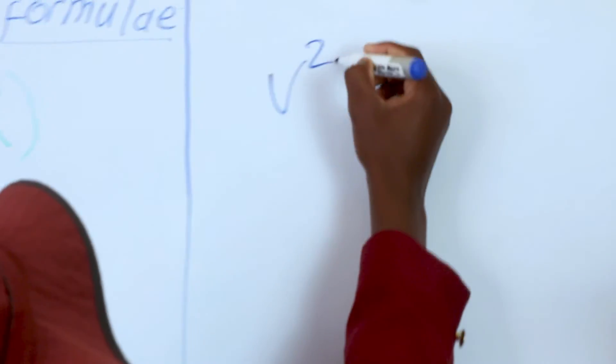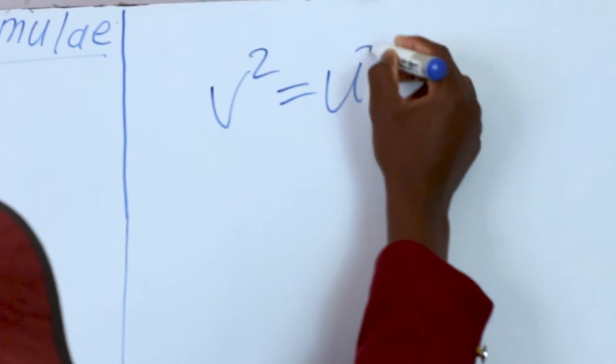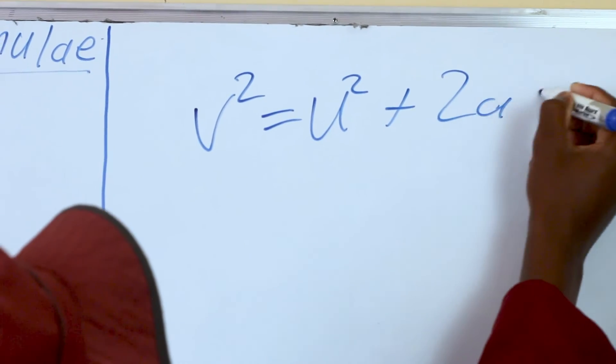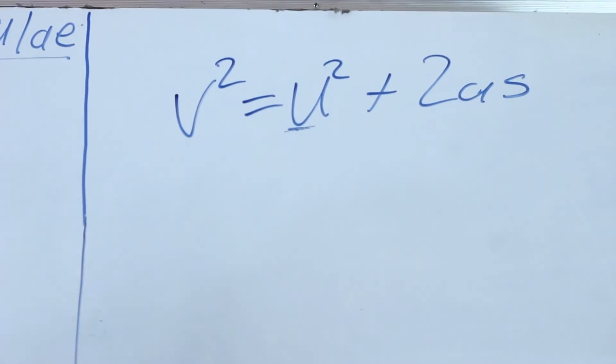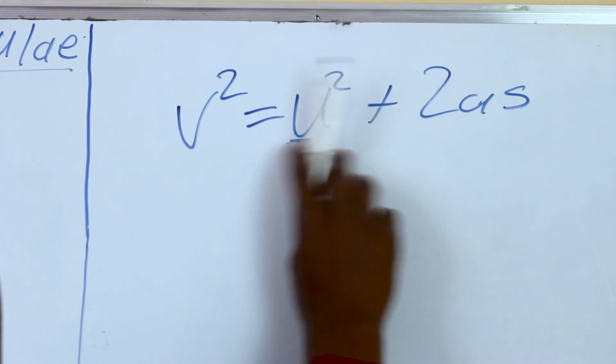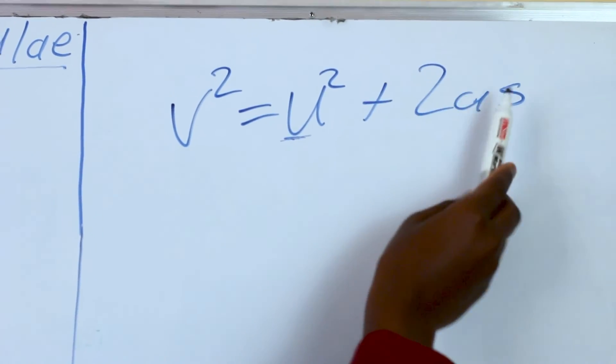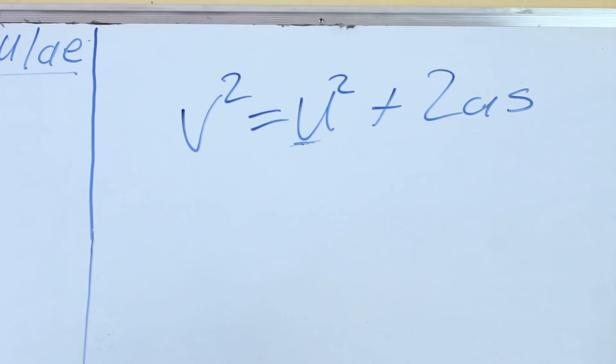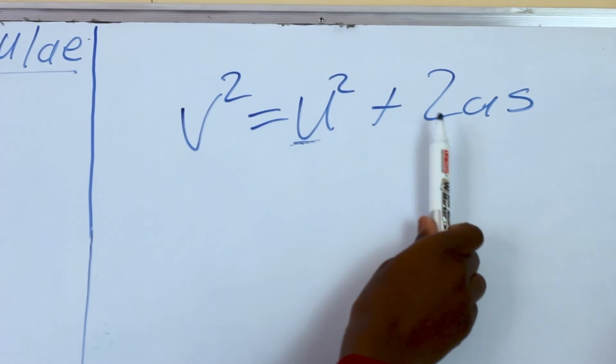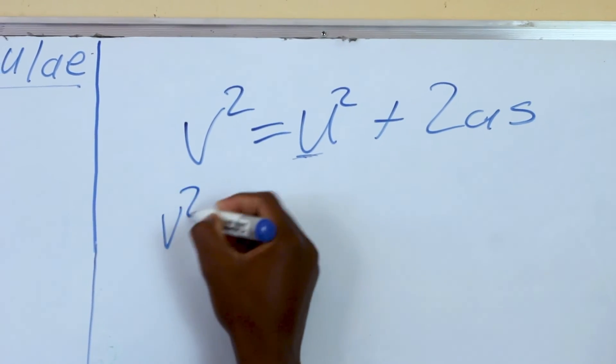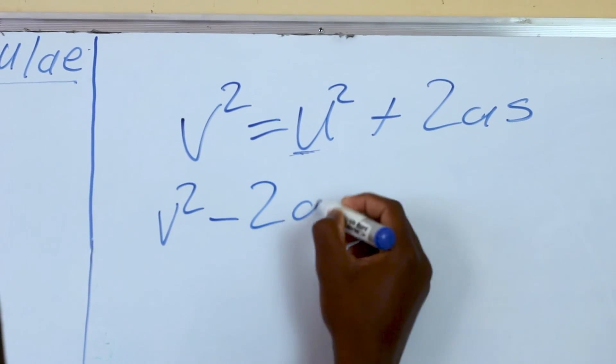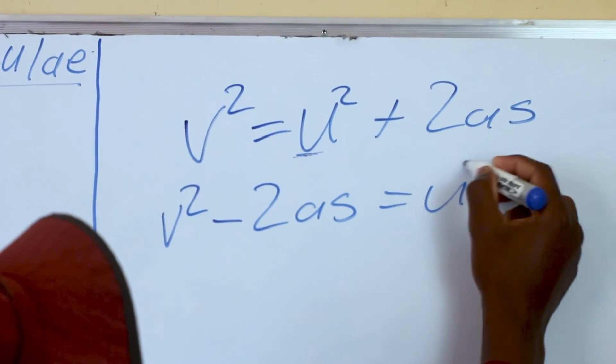It's V squared equals to RPT plus 2as, and we want to make U the subject of the formula. We make 2as cross the equal sign. We all know if a number crosses the equal sign, the sign changes. So it will become V squared minus 2as equals U squared.